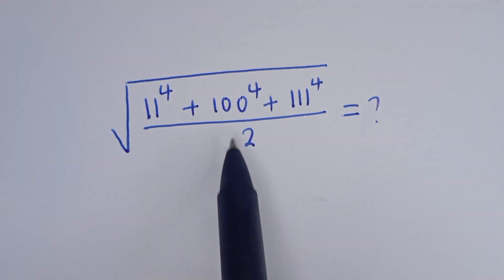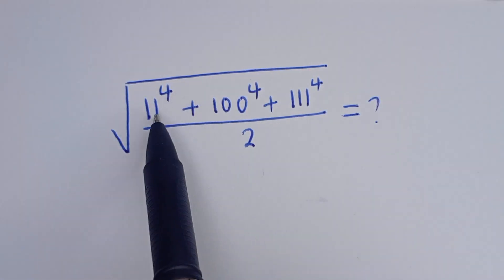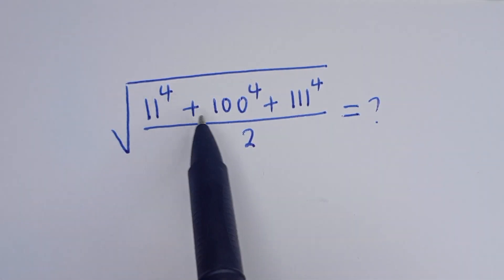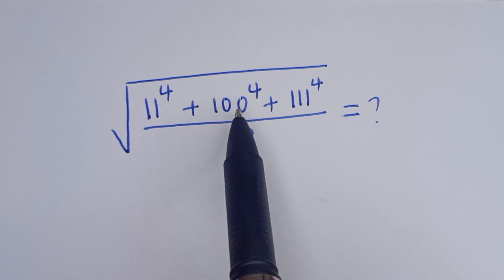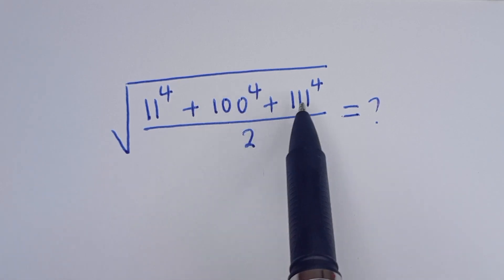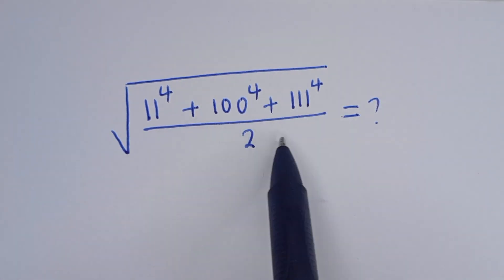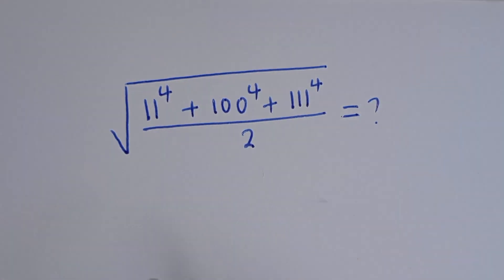Hello. How to simplify this nice math problem: square root of 11 to the power of 4, plus 100 to the power of 4, plus 111 to the power of 4, divided by 2.